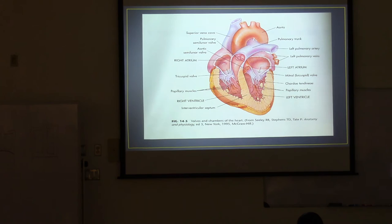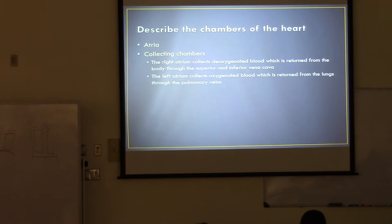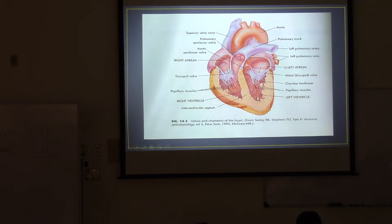The right atrium is collecting blood flowing from the superior vena cava draining into the right atrium, and then coming up from the lower body, the inferior vena cava, also draining into the right atrium. The left atrium collects oxygenated blood, which is returned from the lungs through the pulmonary veins. The blood arriving in the left atrium brings freshly oxygenated blood back from the lungs.